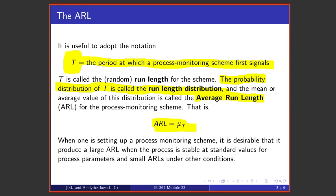When one is setting up a process monitoring scheme, it's desirable that it produce a large average run length when the process is stable and at standard conditions, and it produce small average run lengths under other conditions. What one wants a process monitoring scheme to do is not bother one, not cause alarm when everything is standard, but to signal when something happens and the process is no longer behaving at standard conditions.